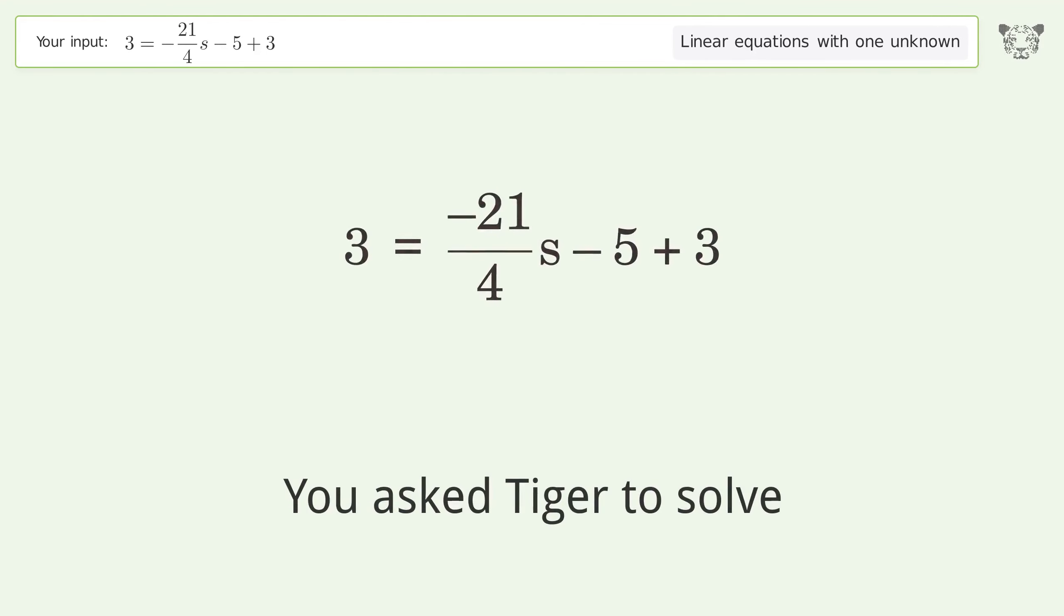You ask Tiger to solve this. It deals with linear equations with one unknown. The final result is s equals negative 20 over 21.